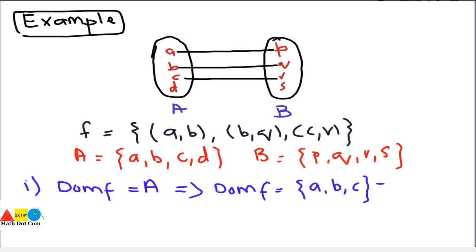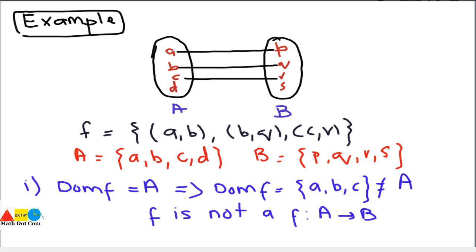The domain {a, b, c} is not equal to A = {a, b, c, d}, so condition one is not satisfied. Therefore f is not a function from A to B, and we need not check the second condition. In summary: there should be no element left unmapped from A to B, and the first element of the pairs should not be repeated. These are the two conditions to determine whether f is a function from A to B.